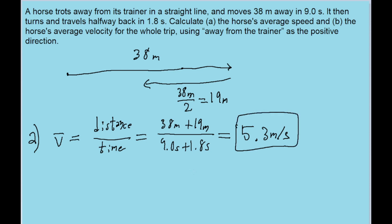Pretty simple. Part B asks then for the average velocity. Now average velocity is a little different because velocity is based on displacement rather than speed. So even though the horse traveled a total distance of 38 and 19 meters,